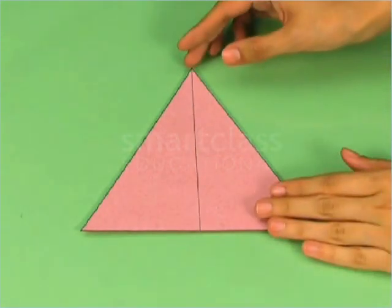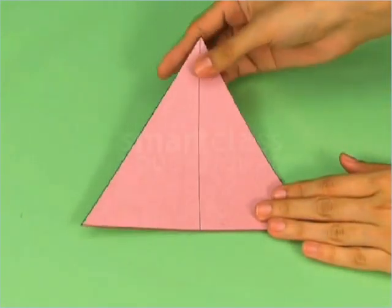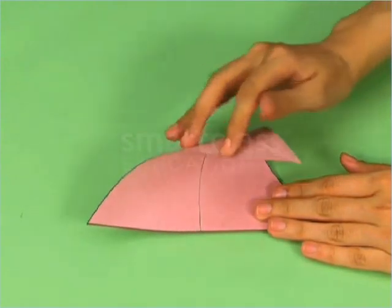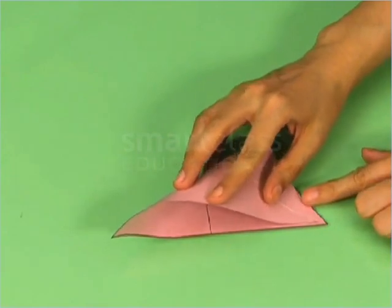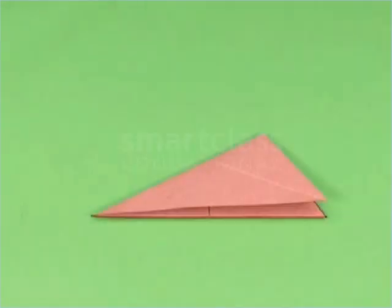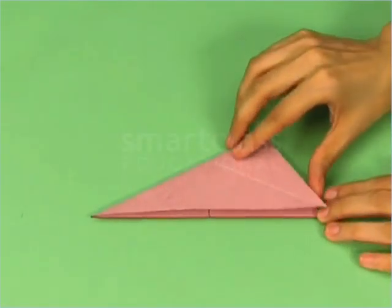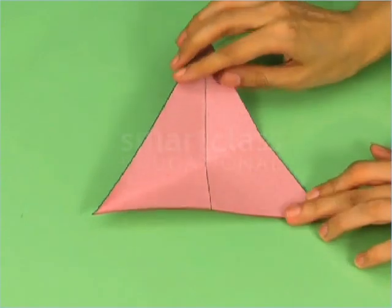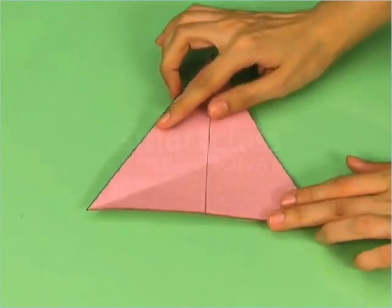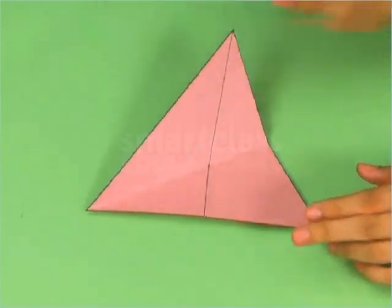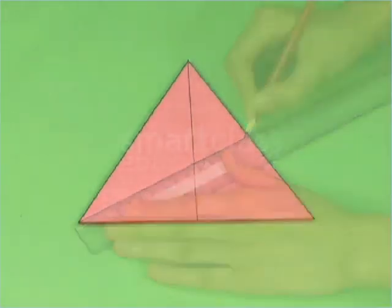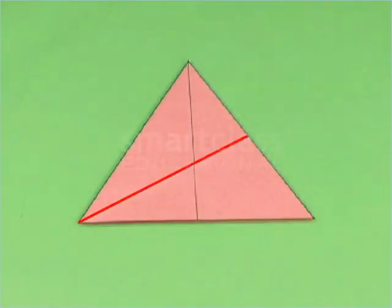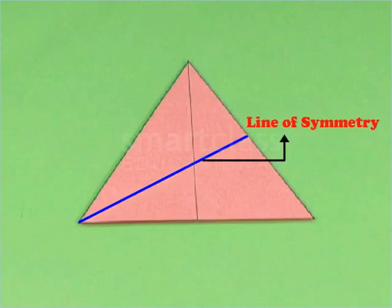Now, fold the triangle through the second vertex so that the two parts of the triangle exactly overlap each other. Unfold the triangle to get a crease. Use the pencil and the ruler to draw a line on the crease. This line of fold represents the second line of symmetry of the triangle.